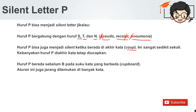Lalu kemudian, huruf P berada sebelum B pada suku kata yang berbeda. Contohnya adalah cupboard — kita tidak membaca huruf P-nya. Aturan ini juga jarang ditemukan di banyak kata. Jadi, dengan kata lain, kita fokus pada aturan yang pertama: huruf P bergabung dengan huruf S, T, dan N. I'm gonna show you the examples.